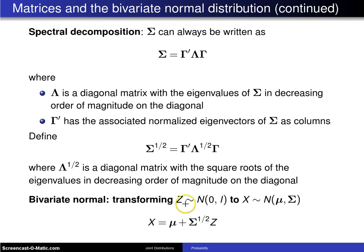Where z is a bivariate standard normal, and that's written as normal with a mean of zero and a variance covariance matrix I. And if you do that, you will get a bivariate normal random variable x all written in matrix form.